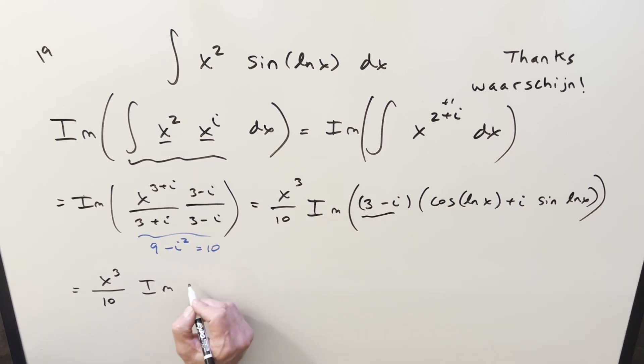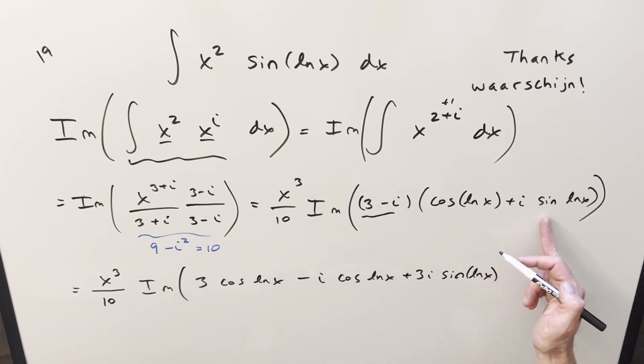And so now to finish it, we will distribute it all out. So we're going to have 3 times cosine ln x for the first part. Then I'll have minus i cosine ln x, then plus 3i sine ln x, and then minus i times i sine ln x. Well, the i squared becomes a minus 1. Minus times minus is plus, and so this becomes plus sine ln x. But now I think we're ready to use this part here.